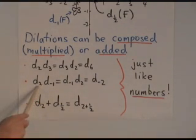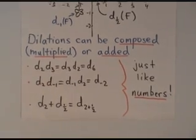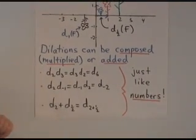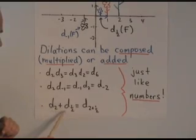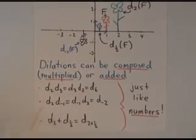There's another example. Dilate by two, dilate by minus one, you get dilate by minus two. A somewhat different operation is addition. Let me explain that. So if we want to dilate by two, and we dilate by half, and we want to add those operations, what does it mean?